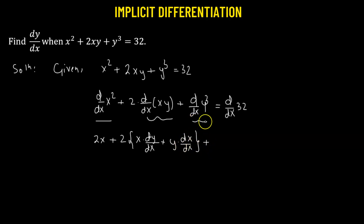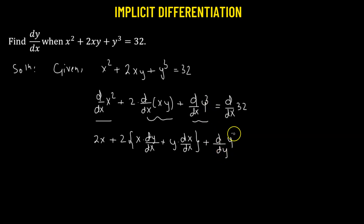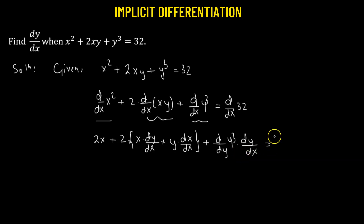To find the derivative of y cubed with respect to x, we take the derivative with respect to y of y cubed, multiplied by the derivative of y with respect to x — this is the chain rule. The right-hand side: 32 is a constant, so its derivative is 0.